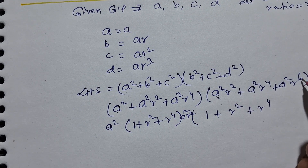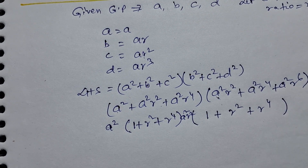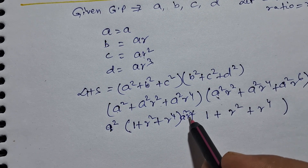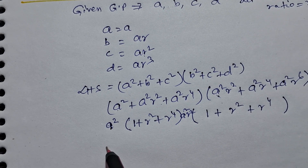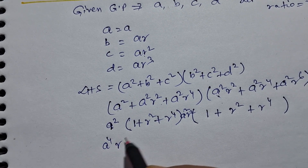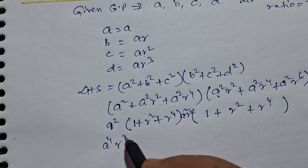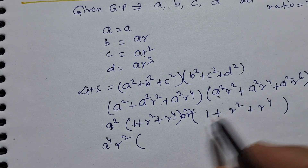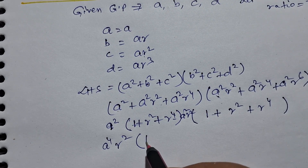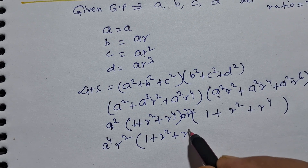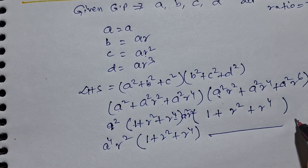R4 has come from R6 minus R2. So from A square multiplied by A square R square, we get A4 R square, into 1 plus R square plus R4, multiplied by 1 plus R square plus R4. So LHS equals A4 R square into 1 plus R square plus R4, whole square. This is LHS — equation 1.